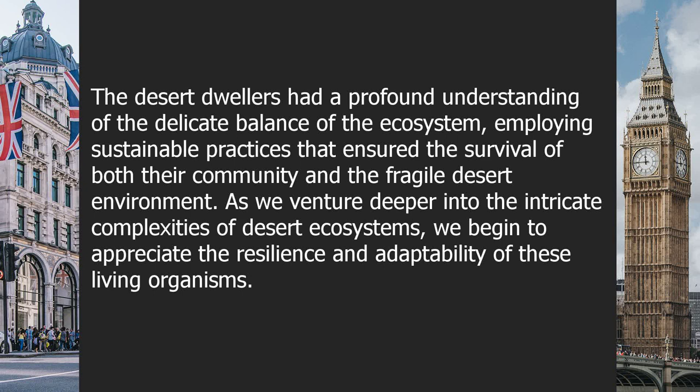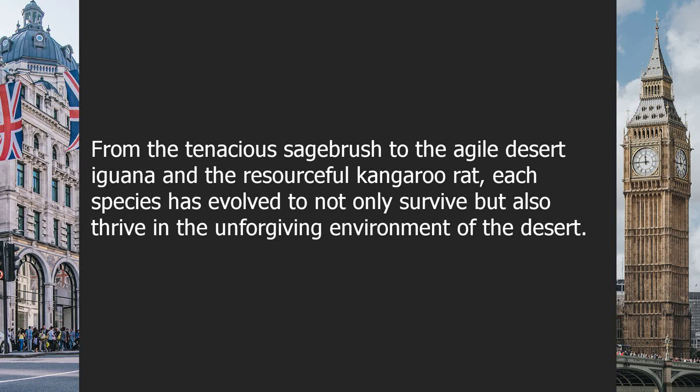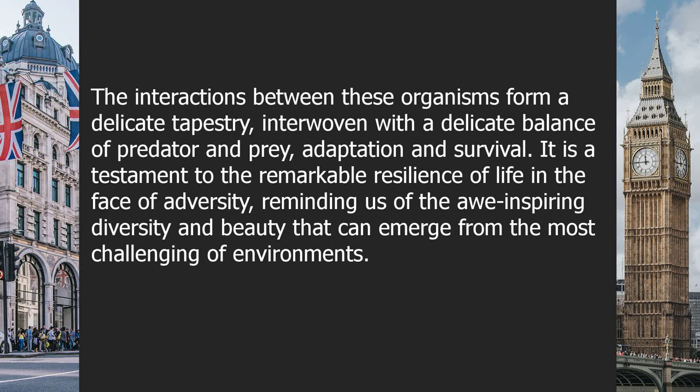The desert dwellers had a profound understanding of the delicate balance of the ecosystem, employing sustainable practices that ensured the survival of both their community and the fragile desert environment. From the tenacious sagebrush to the desert iguana and the resourceful kangaroo rat, each species has evolved to not only survive but also thrive. The interactions between these organisms form a delicate tapestry — interwoven with a balance of predator and prey, adaptation, and survival. It is a testament to the remarkable resilience of life in the face of adversity. Question: What is an ecosystem in the desert? Check the video description for the answer.